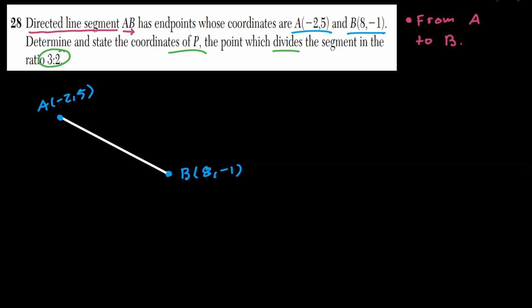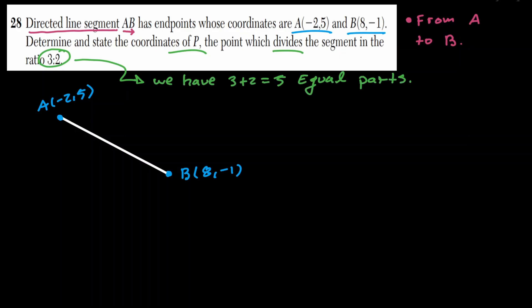If this line segment gets divided into a ratio of 3 to 2, then there are 5 equal parts. Let's divide the line segment into 5 equal sections. To find the vertical distance, let's find the difference among the y values: starting at y of 5 going to y of negative 1, you travel 6 points. And the horizontal distance from negative 2 to 8 is 10 units.